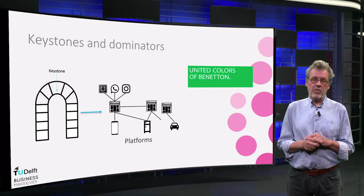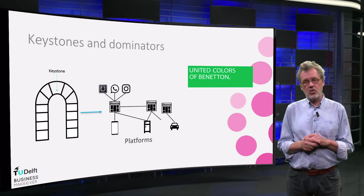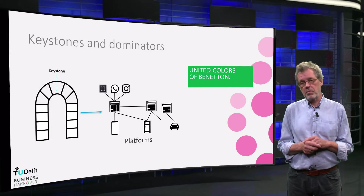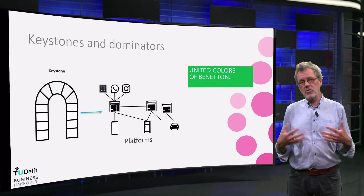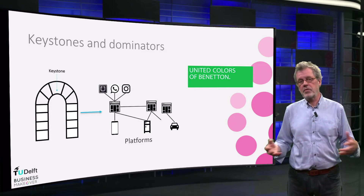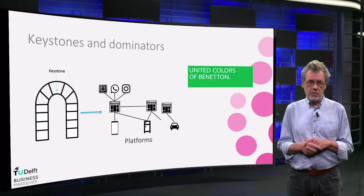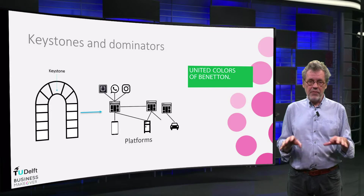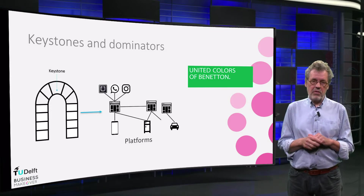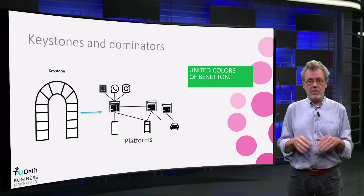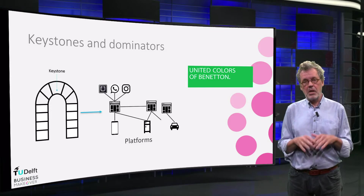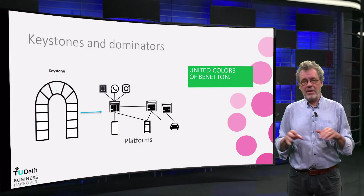In many cases that we studied, we found that SMEs with successful business models follow this platform keystone model. We label this model as the Benetton model. Benetton is a famous fashion chain that acts as an orchestrator in their ecosystem and outsources most of the business functions. They focus on their core capabilities like management, fashion design, marketing and IT.